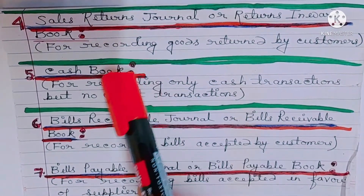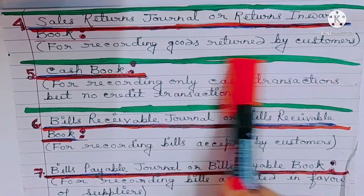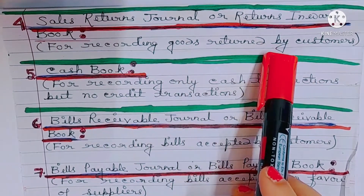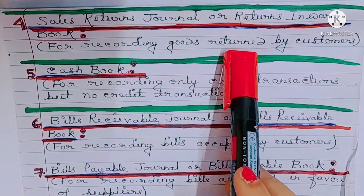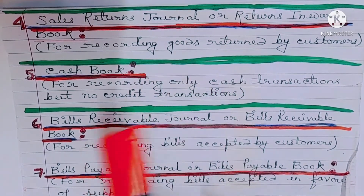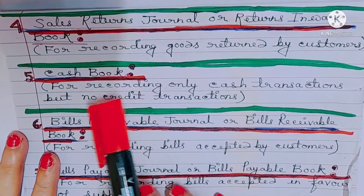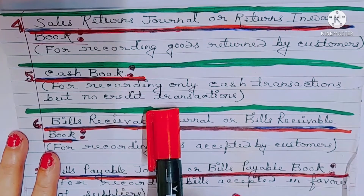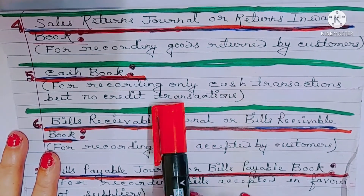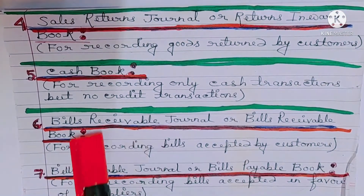In the sales returns journal or returns inward book, only goods returned by customers are recorded — that is, goods that were sold and then returned by the customer. Number five: cash book, which only records cash transactions; no credit transactions.